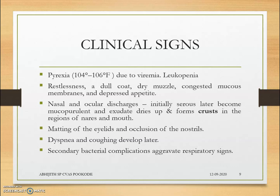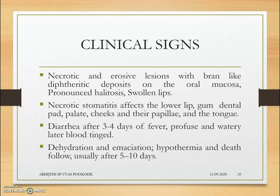Clinical signs include pyrexia due to viremia, leukopenia due to self-destruction of leukocytes, restlessness, dull coat, dry muzzle, and nasal and ocular discharges due to upper respiratory tract viral proliferation. Matting and sticking of the eyelids, occlusion of the nostrils, dyspnea, and coughing occur. Later, secondary bacterial complications aggravate respiratory signs causing viral and bacterial bronchopneumonia. Exudates in the nasal region rise and form crusts around the nares and mouth, which slough off and contaminate feed, serving as a main route of transmission.